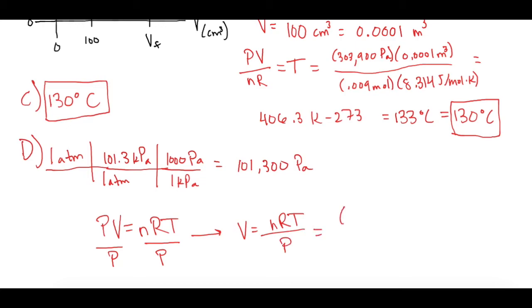Let's plug in the numbers. We have 0.009 moles times R is 8.314 joules per mole K times our temperature we just solved for and use the Kelvin version. So we'll use 406 Kelvin. Now we'll divide that by the pressure which we just solved for, is 101,300 pascals.